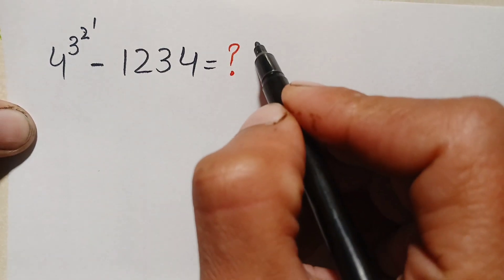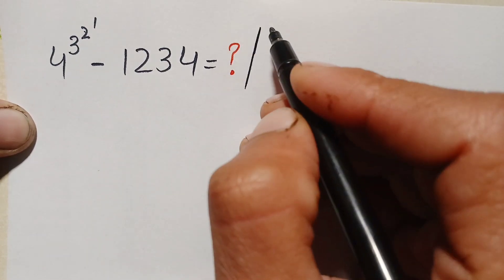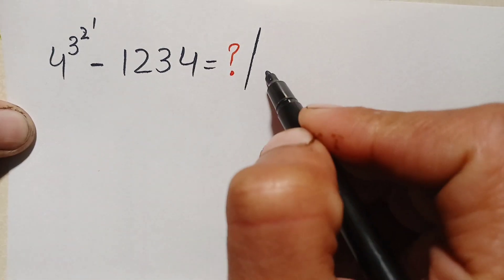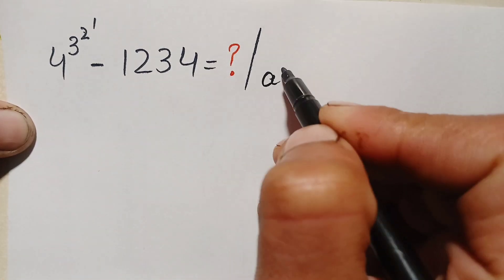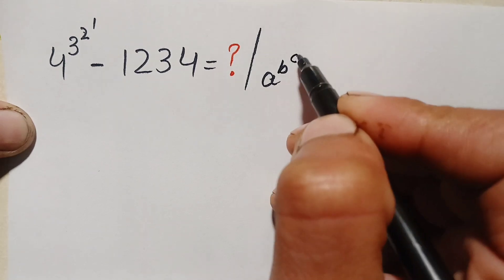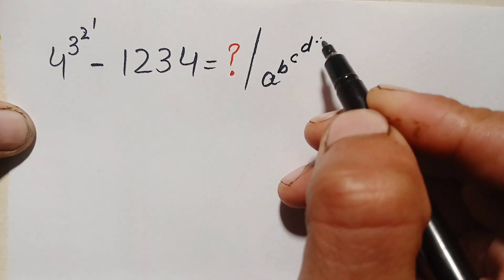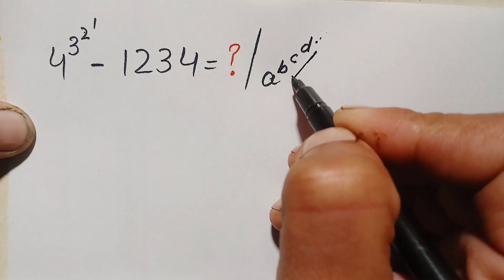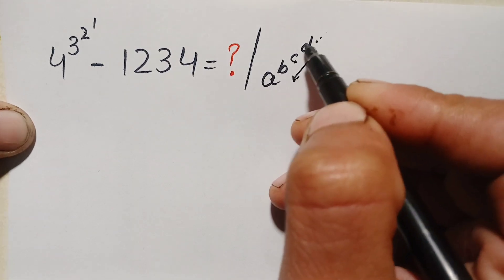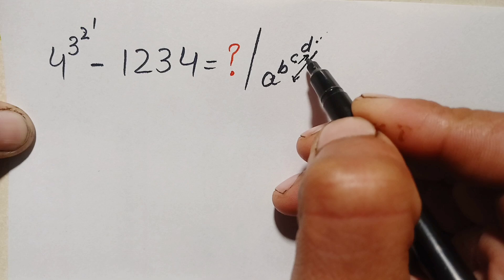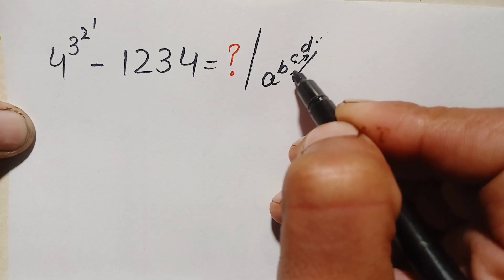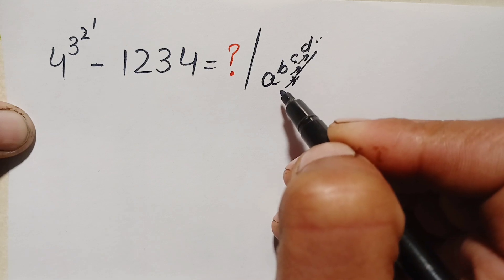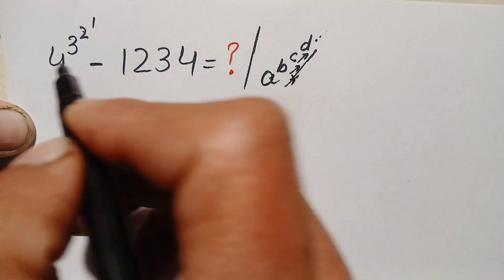So how can we solve a number in this form having one base and three powers? Remember that when we have a number in this form, there are some specific rules to solve it. If we have a number like a raised to power b raised to power c raised to power d and so on, we solve the powers from top to bottom.